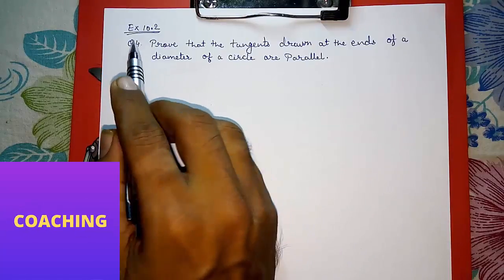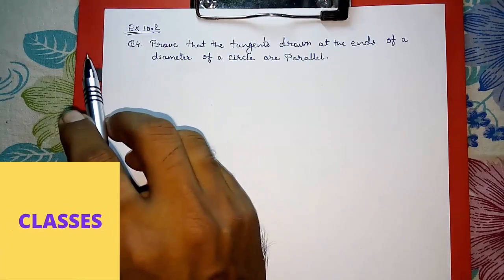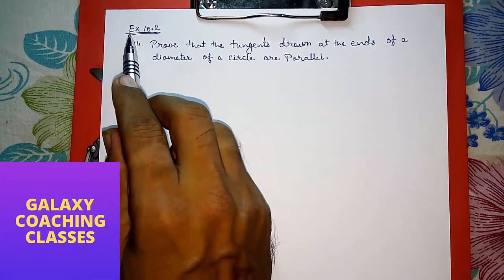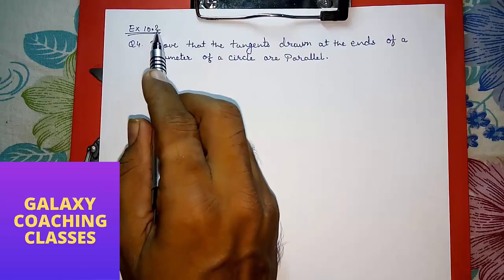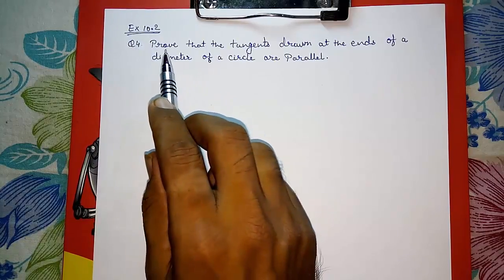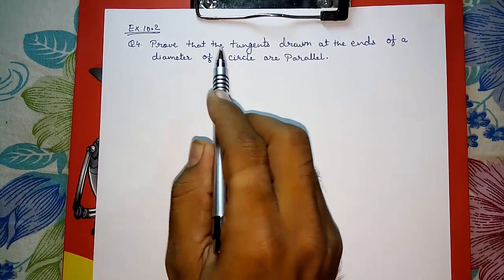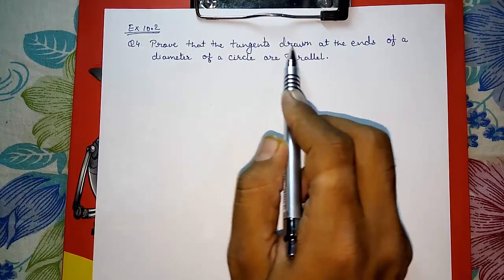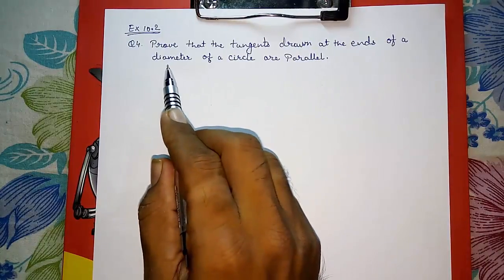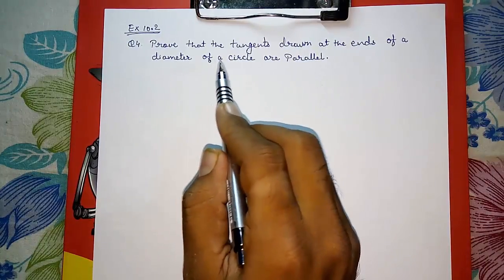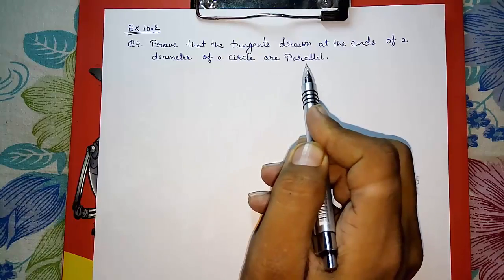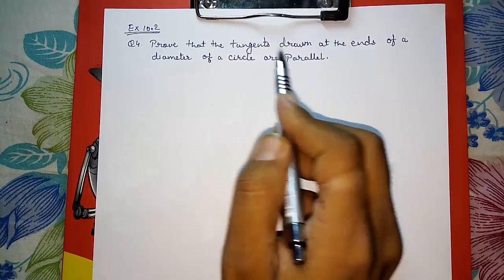Hello friends, today we are going to solve CBSE Class 10 Exercise 10.2, Question Number 4: Prove that the tangents drawn at the ends of a diameter of a circle are parallel.